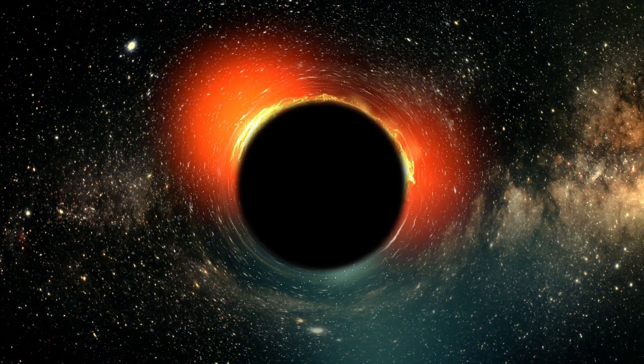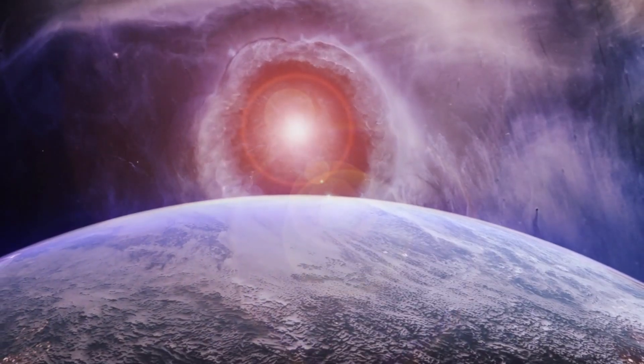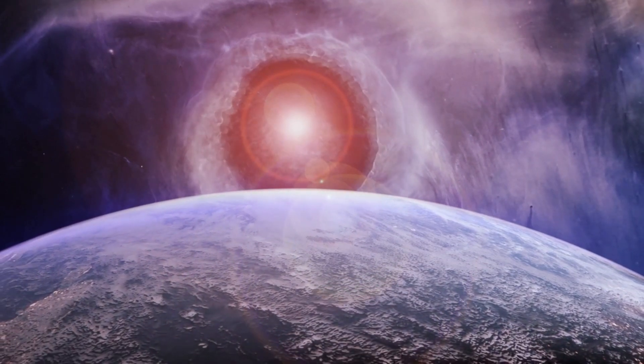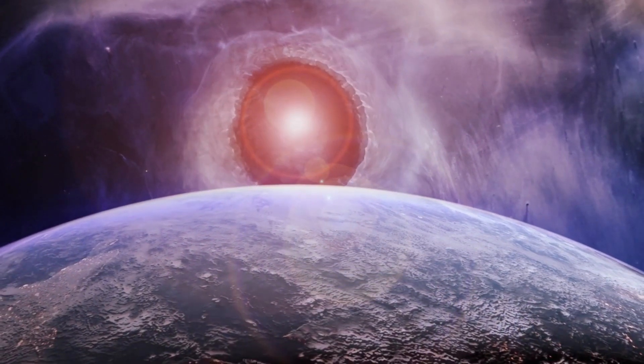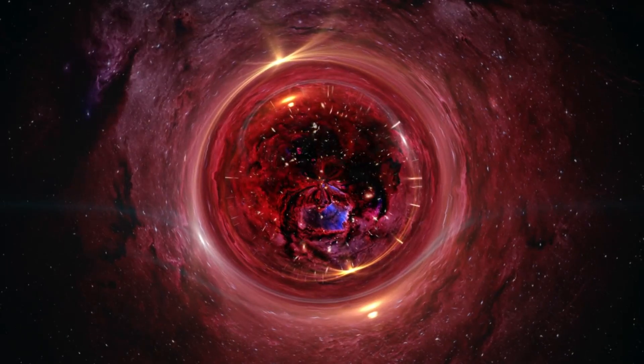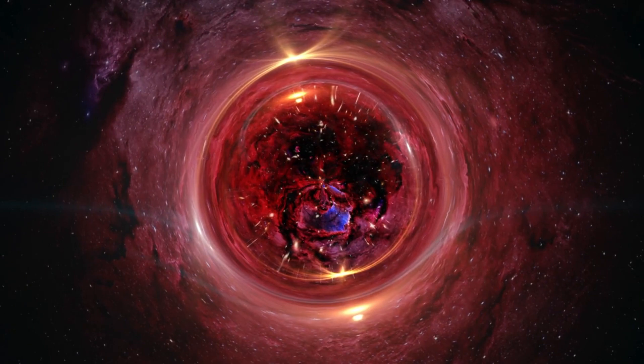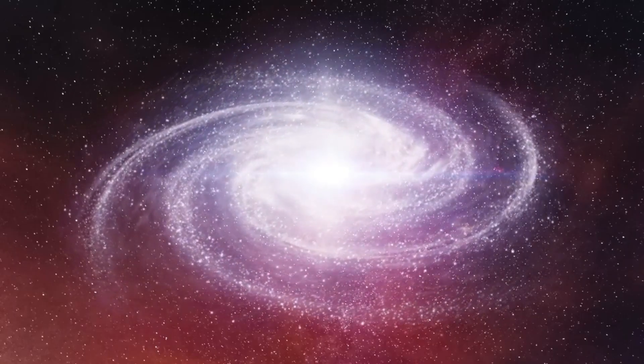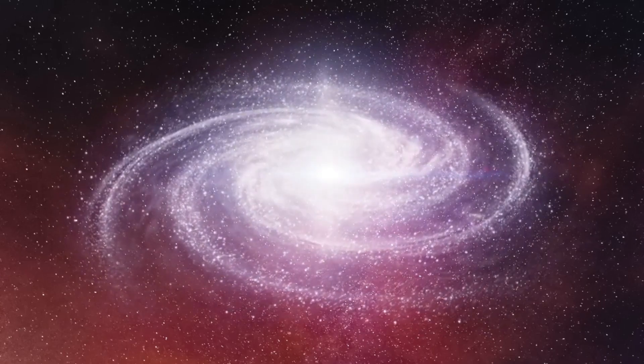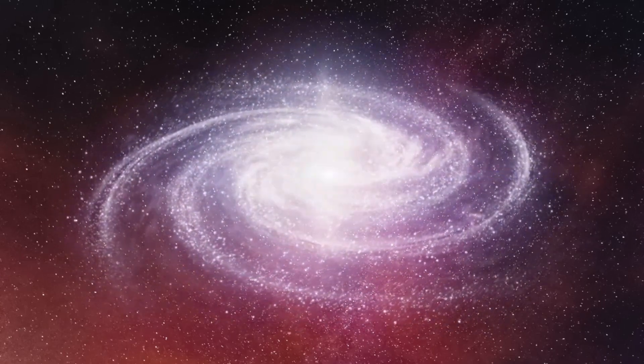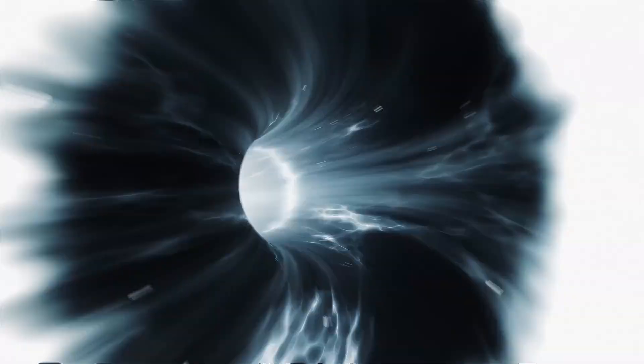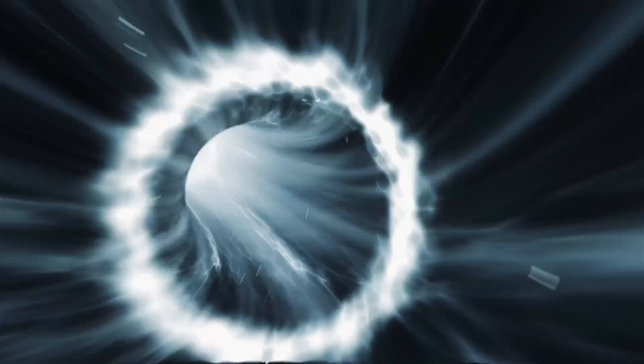However, several theories have been proposed to explain their origins. One prominent hypothesis suggests that supermassive black holes evolve from smaller black holes through a process called accretion. In this scenario, as matter such as gas, dust, and stars accumulates around a black hole, it forms a swirling disk known as an accretion disk. The immense gravitational pull of the black hole draws this material inward, causing it to spiral into the black hole and merge with it over vast periods of time. This continuous accretion of matter allows the black hole to grow to a supermassive scale.